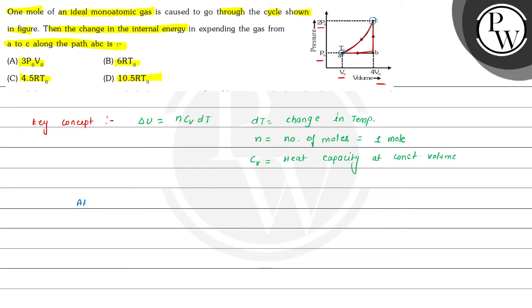So firstly, at A, T₀ is equals to, according to ideal gas equation, we can write PV is equals to NRT and from here the temperature is equals to PV upon R because here N is taken as number of moles that is equals to 1.